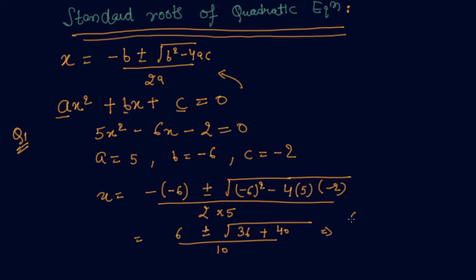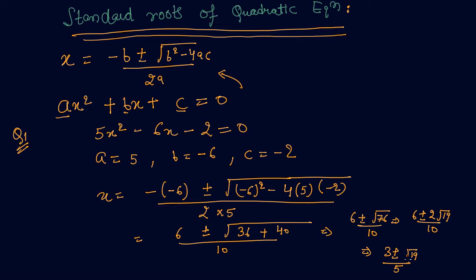Simplifying: minus of minus 6 is plus 6, and 36 plus 40 upon 10. This comes out to be 6 plus minus root of 76 upon 10, which simplifies to 2 root 19 upon 10. After taking common factor 2, we get the answer as 3 plus minus root 19 by 5, which matches our previous result.